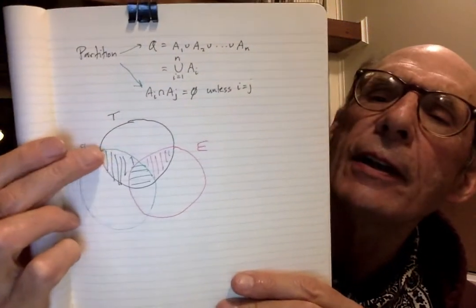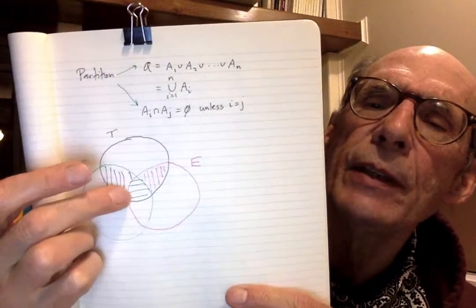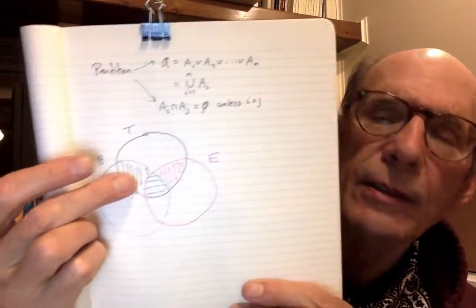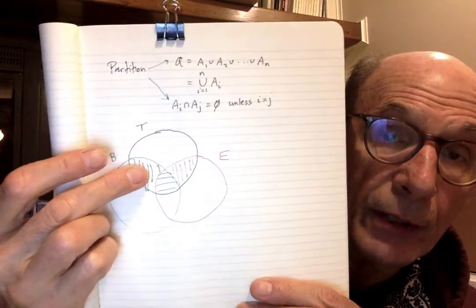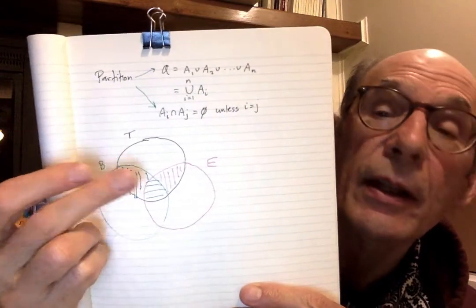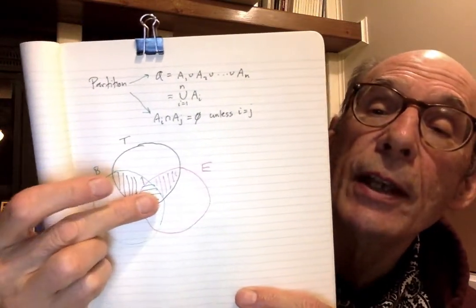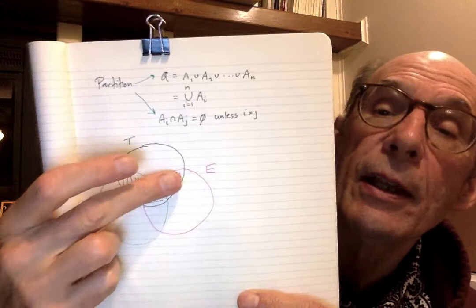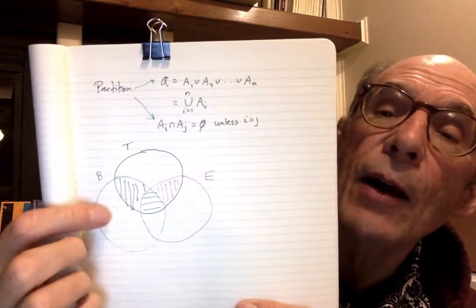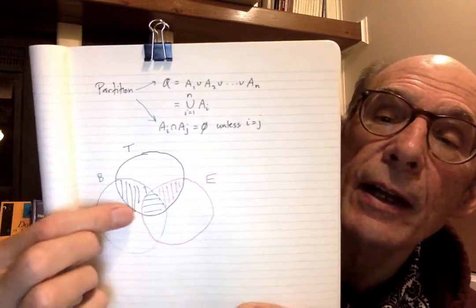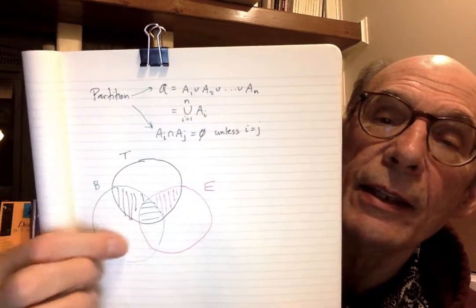I've colored in three of these regions: there's nothing smaller in the picture than this region — that's one set in the partition. Here's another, and here's another. Out over here, this kind of mustache-shaped thing is another set in the partition. All we're saying is we've taken something and chopped it up with no overlaps. The fancy word for that is partition.